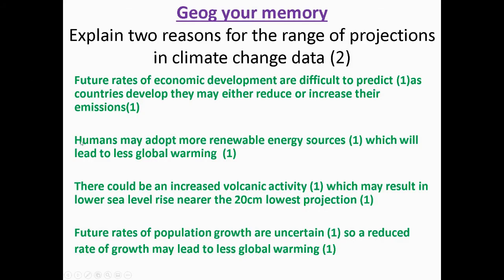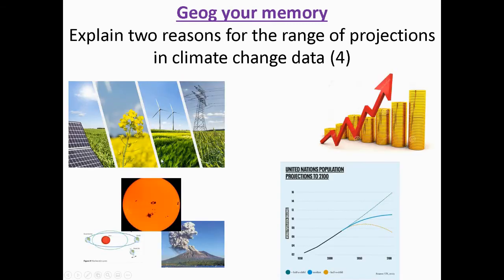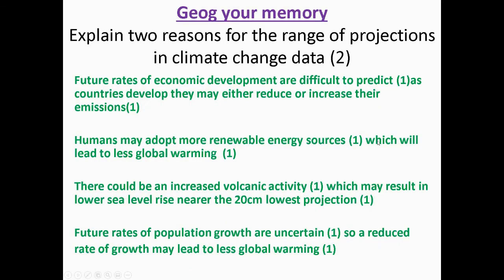The second point on here is about humans may adopt more renewable energy sources. So if we have a look at this first image here, so humans might choose to use more renewable energy at a faster rate than is predicted. If this is the case, it would reduce the amount of emissions that are taking place, meaning there's less impact from climate change, global warming, meaning that temperatures might not increase as quickly as was first expected. So you can see that here, which will lead to less global warming.